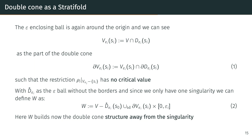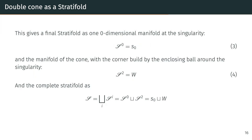In the second step, we define the part away from the origin. For that we define the epsilon-enclosing ball around the origin. We see that the intersection of the algebraic variety and the epsilon-enclosing ball forms part of the double cone. Over the intersection with the boundary of the enclosing ball, we get the boundary on the surface given by the algebraic variety, such that the restriction on the algebraic variety without the zero set has no critical values. From there we can define W as the part of the double cone structure away from the singularity. Bringing all parts together, we get the zero-dimensional manifold at the singularity as one subset of the stratifold and W as the second part, whose disjoint union gives the stratifold.